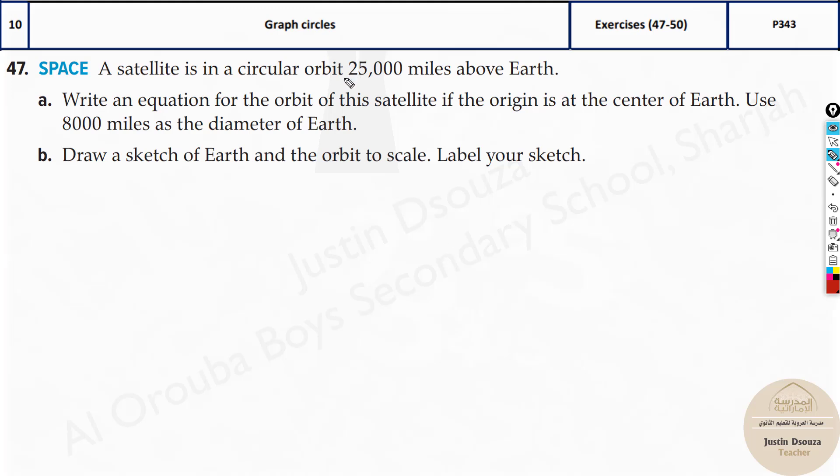So now here they have told a satellite, imagine this is the satellite rotating, that is 25,000 miles above the Earth. Now if I have Earth over here, the distance would be 25,000 miles above. But there is one more thing, the diameter of Earth is given and this is where the satellite is orbiting from the center of the Earth. Now what is from here to here, that is 4k and then 25k.